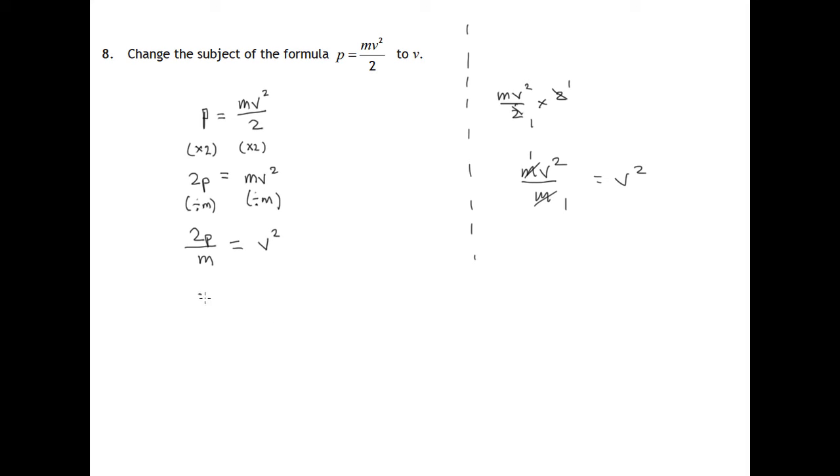Now, turning this round, V squared we now know is 2P over M. And we finally want to get rid of the squaring. The opposite operation to squaring is square rooting. So when we square root the left hand side, we'll just get V and the square root of 2P over M.